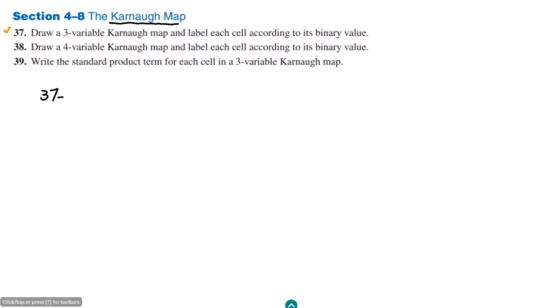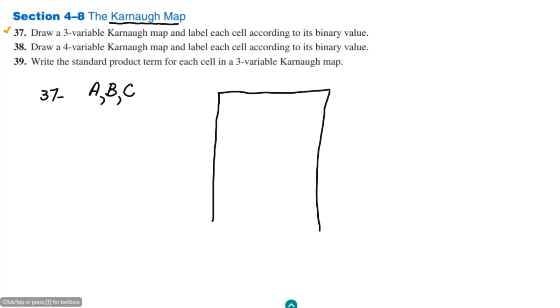Question 37 asks us to draw a three-variable Karnaugh map and label each cell according to its binary value. So we have to draw a Karnaugh map of three variables — let me call those three variables A, B, and C. In the Karnaugh map, we draw a table, and here along one axis we write one variable — let me write C.